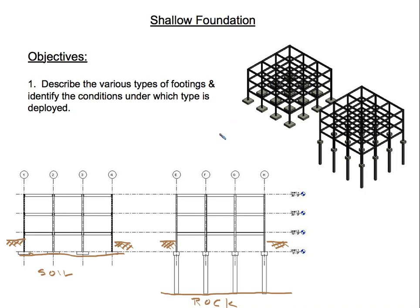Shallow foundations are composed of footings, which are plate-type elements placed on the ground. The whole point of footings is to transmit the loads from columns and walls to the ground in a safe manner. In this video we are going to describe the various types of shallow footings and identify the conditions under which each type is deployed.